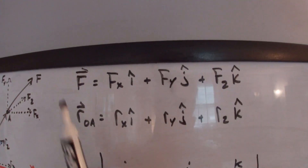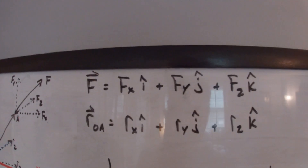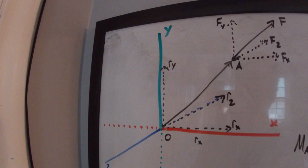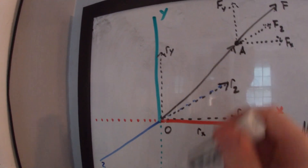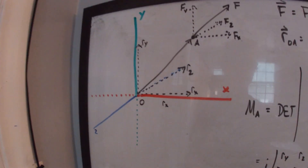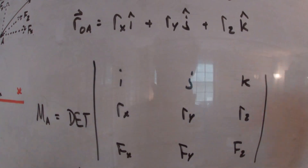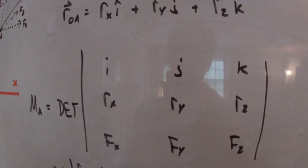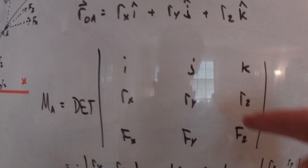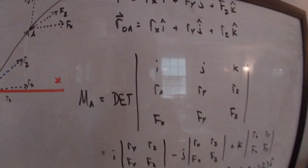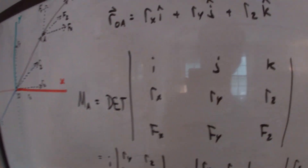Once we break them into components, we express them as vectors: F equals Fx·i plus Fy·j plus Fz·k, and R_OA equals Rx·i plus Ry·j plus Rz·k. To find the moment that F causes about O, we create a 3x3 matrix in a specific manner: I, J, K in the top row; XYZ components of the position vector from O to A in the second row; and the three components of the force, Fx, Fy, Fz, in the bottom row.